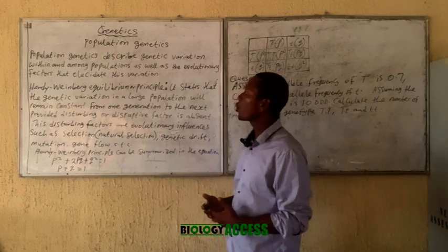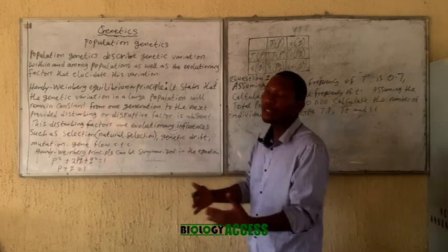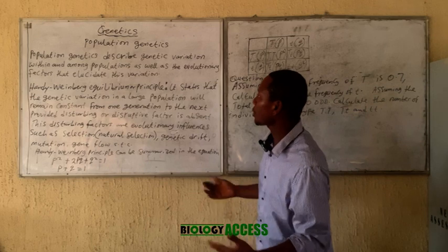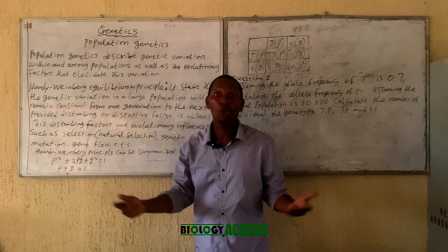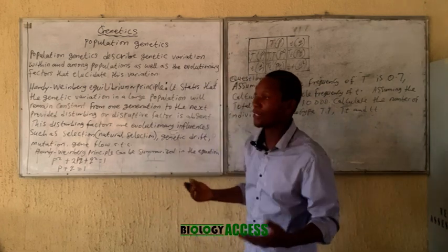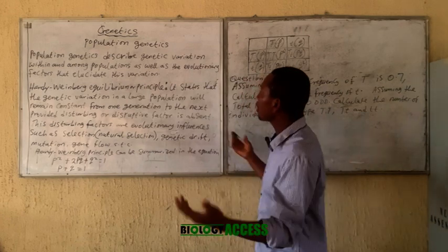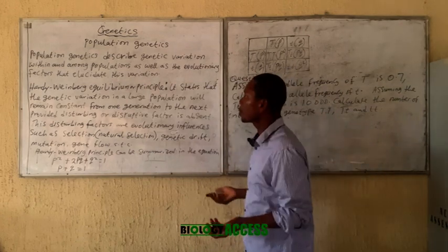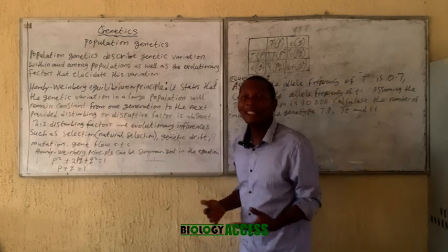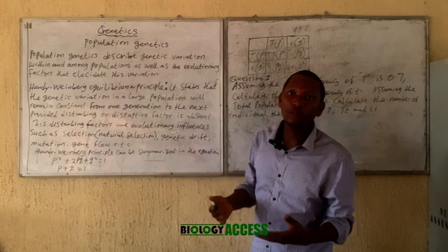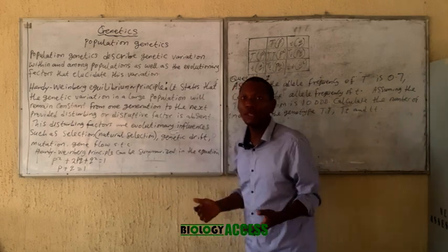When studying population genetics there is a foundational principle called the Hardy-Weinberg principle, or equilibrium. It simply states that the genetic variation in a population remains constant from generation to generation, provided that disruptive forces are absent.